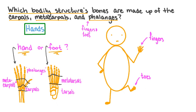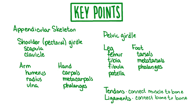Let's wrap up our lesson by reviewing what we've learned. In this video, we learned about the anatomy of the appendicular skeleton — naming and identifying the bones of the shoulder girdle, the pelvic girdle, the arm, the leg, the hand, and the foot. We also learned about the structure of synovial joints, as well as the functions of tendons and ligaments.